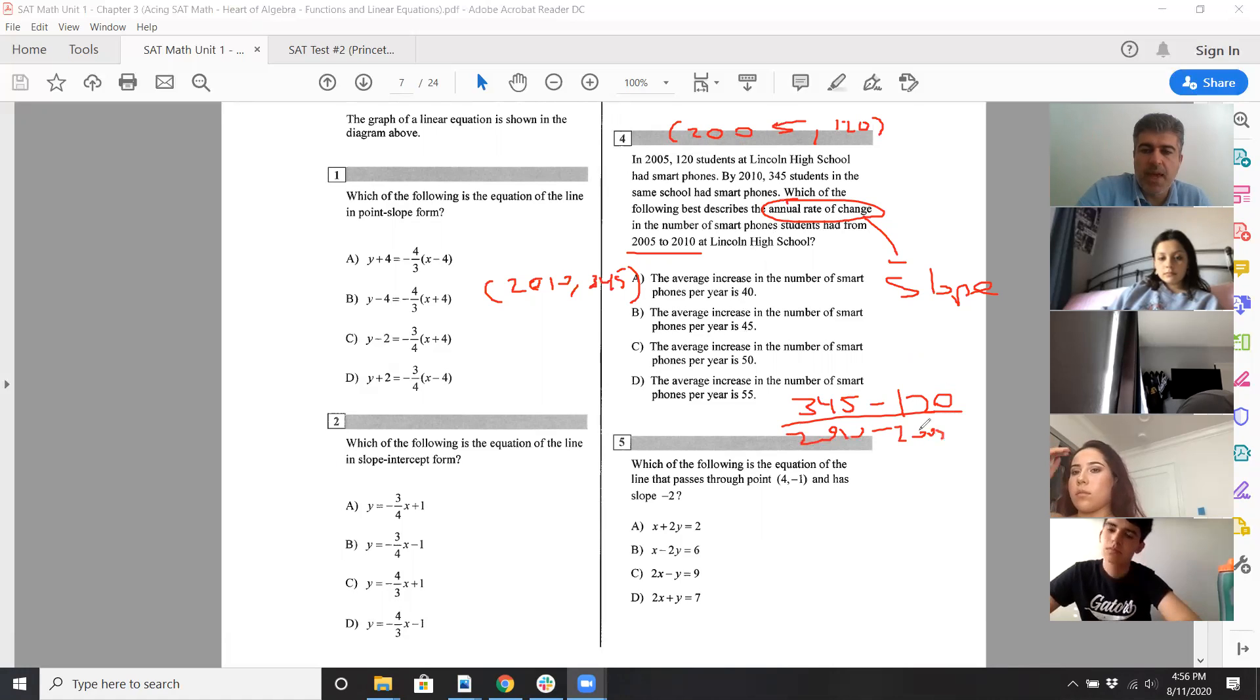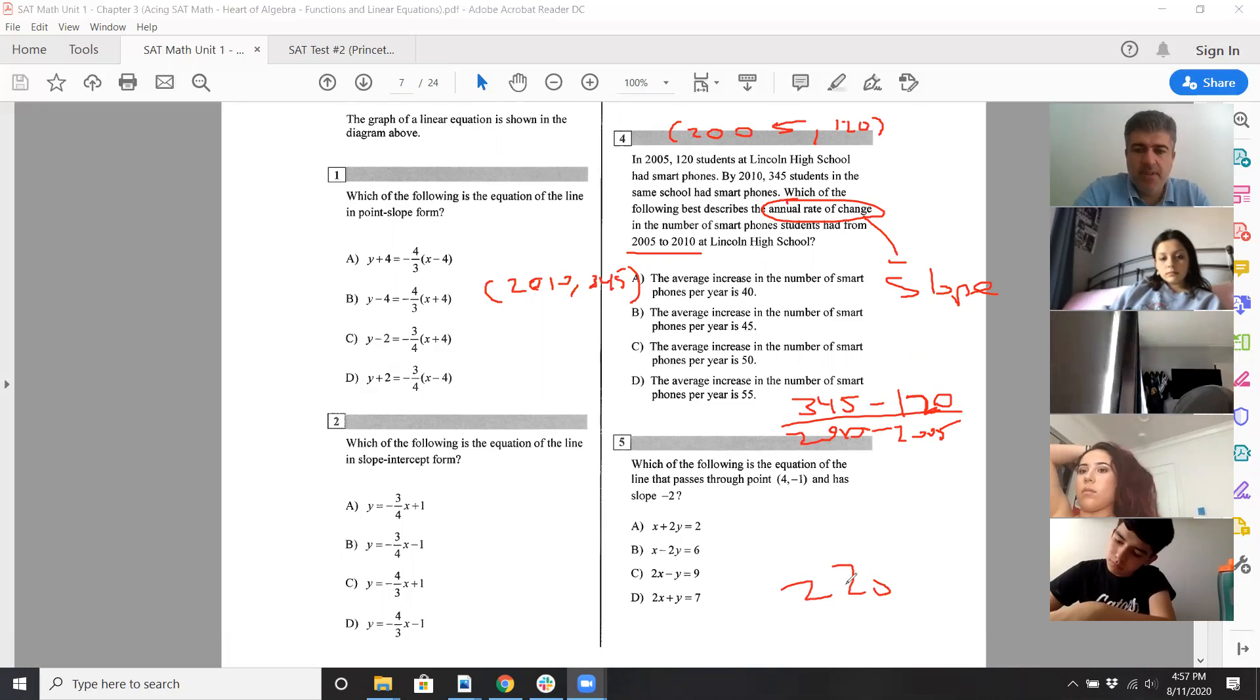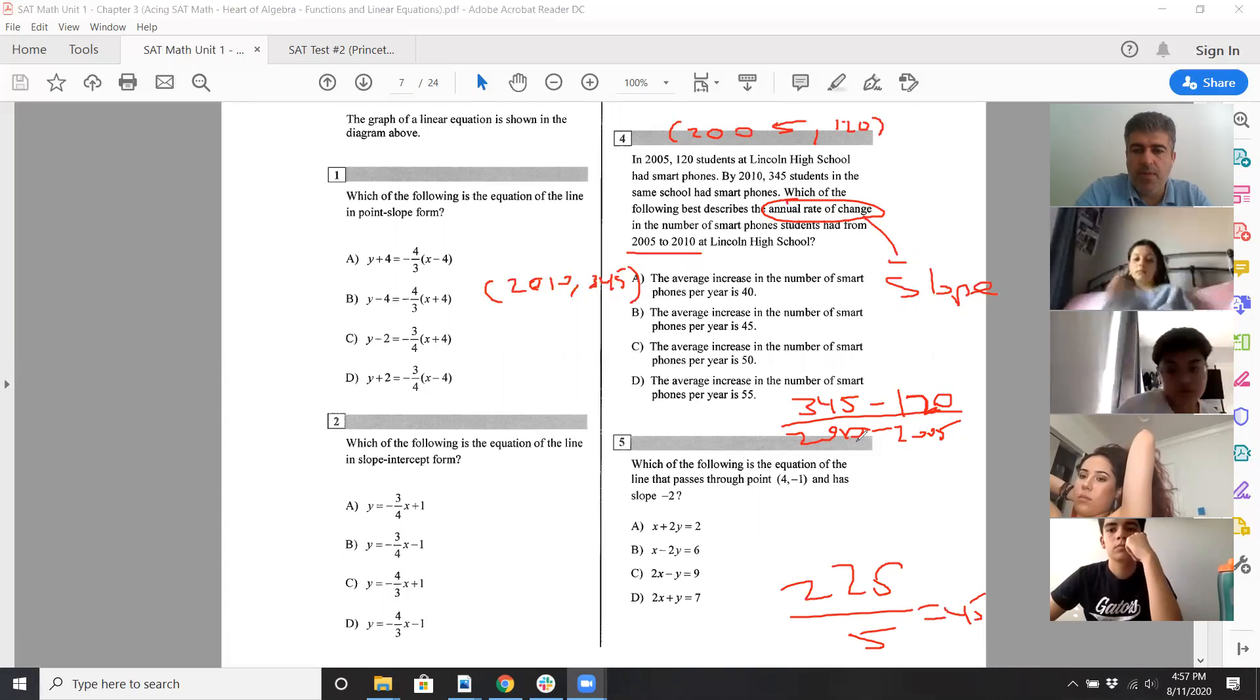Once you kind of draw that, make that connection there. So that's 120, by the way. Messy handwriting, sorry about that. So that's 225 over five. Oh, yikes. 225 over five, which is 45. So it's increased by 45 per year. That's all.